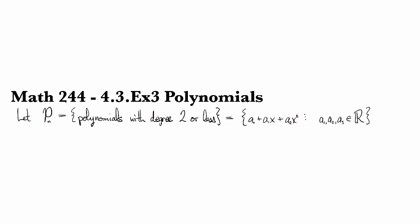And because of that, sometimes this is denoted P2 of R, to indicate where the coefficients are coming from. And I just realized I made a mistake over here. This should have been 2, not n. So these are the polynomials of degree 2.